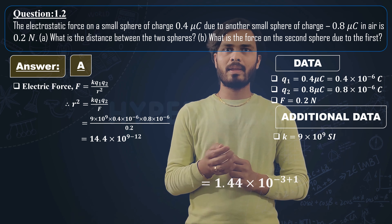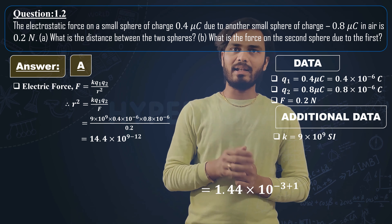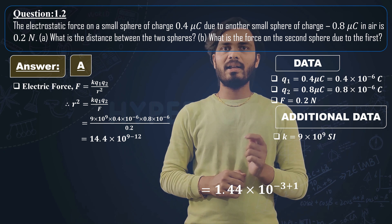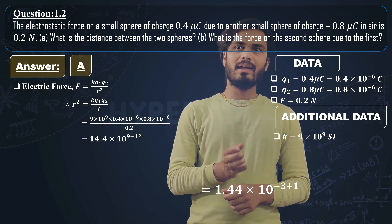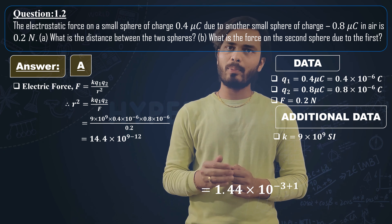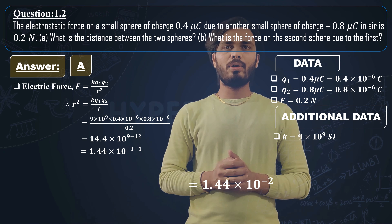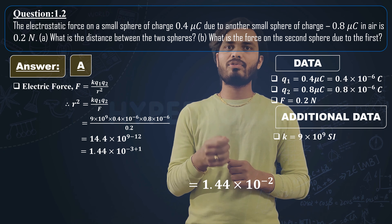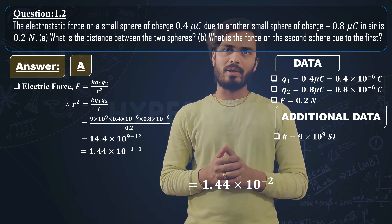Next step: 14.4 is rewritten as 1.44 by moving the decimal point one place, so we add 1 to the power. 9 minus 12 gives minus 3, and minus 3 plus 1 gives minus 2. Therefore r square equals 1.44 cross 10 raise to minus 2.